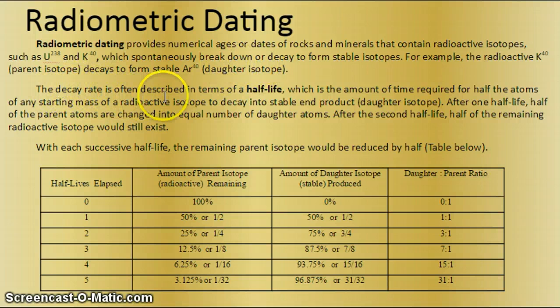The decay rate is often described in terms of a half-life, which is the amount of time required for half the atoms of any starting mass of a radioactive isotope to decay into a stable end product. This is called your daughter. After one half-life, half of the parent atoms are changed into equal number of daughter atoms. After the second half-life, half of the remaining radioactive isotope would still exist. So with each successive half-life, the remaining parent isotope would be reduced by half.